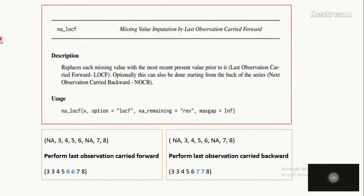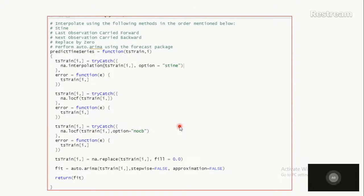Following Stineman interpolation, I used LOCF — Last Observation Carried Forward — which simply pushes the last known value forward into missing slots, and NOCB — Next Observation Carried Backward — which does the opposite. Lastly, if nothing works and the data is still bad, replace remaining missing values with zero. These simple lines of code handled the imputation pipeline.